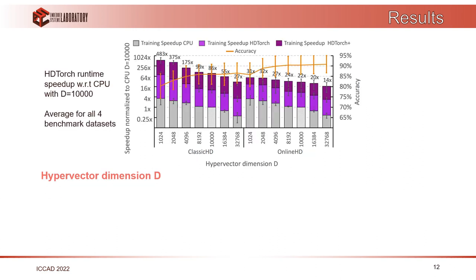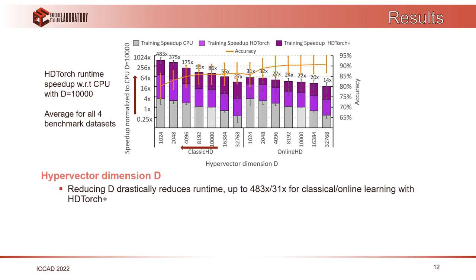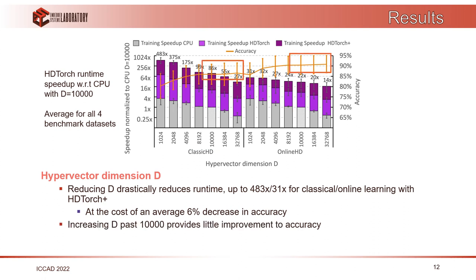We also analyzed the main hyperparameter: hypervector dimension D. Results averaged across all four benchmark datasets show that reducing dimension D drastically reduces runtime and increases achievable speedup, but comes at the cost of decreased accuracy. The good news is that accuracy saturates as D increases — after a certain value of D there is almost no improvement, meaning we can find an optimum between speedup and accuracy.